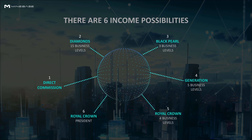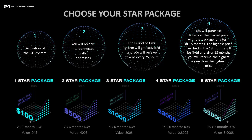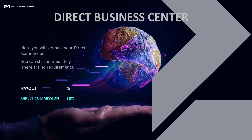The six income possibilities are: first, the direct commission; second, the Diamond business level; third, the Black Pearl business level; fourth, the Generation business level; fifth, the Royal Crown business level; and sixth, the Royal Crown President. There are five packages, each with a duration of 18 months. The highest price on the exchange is fixed during these 18 months, and after that you get the highest price in tokens that was on the exchange during that time. If you recommend a package, you will receive direct commission.